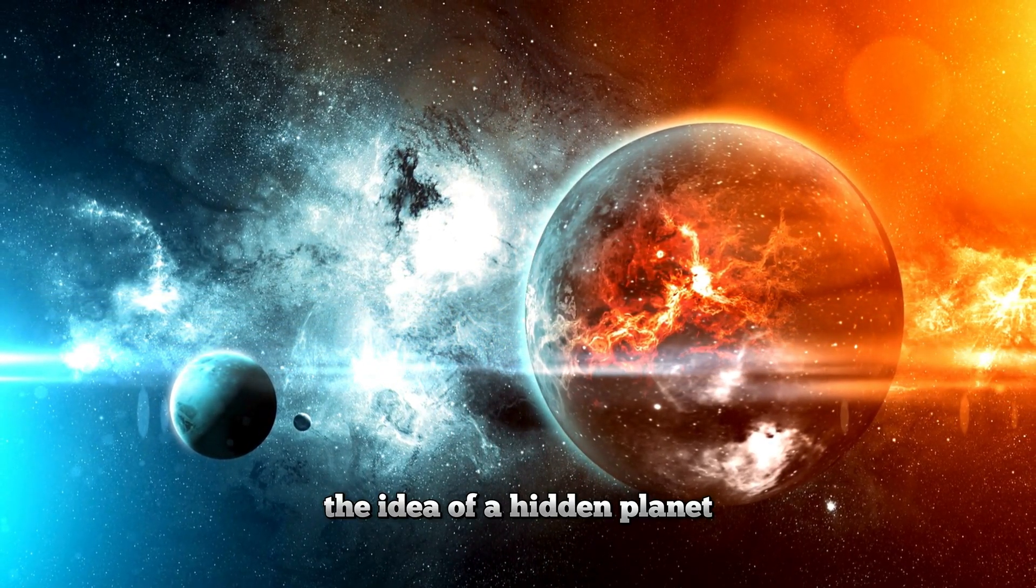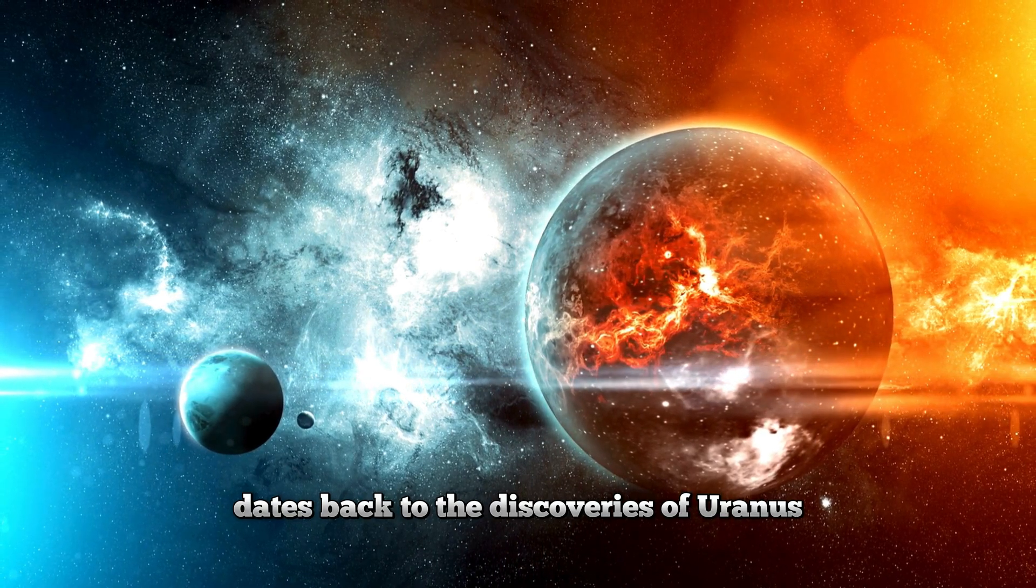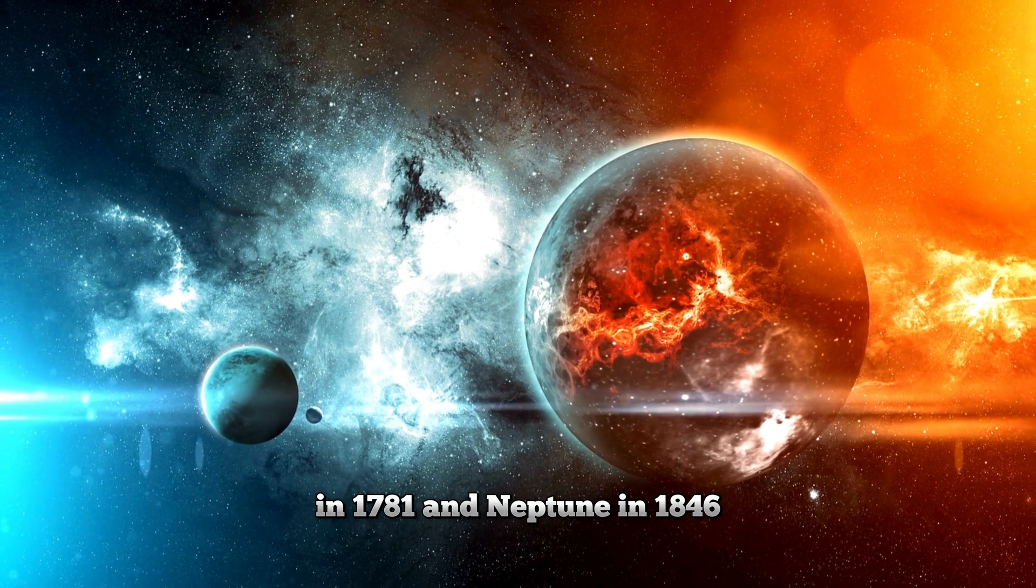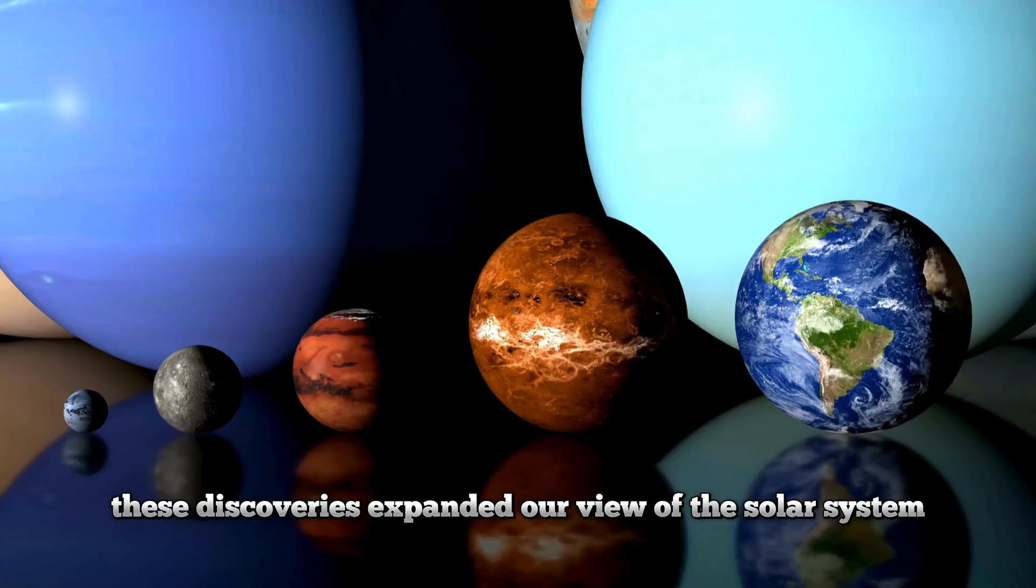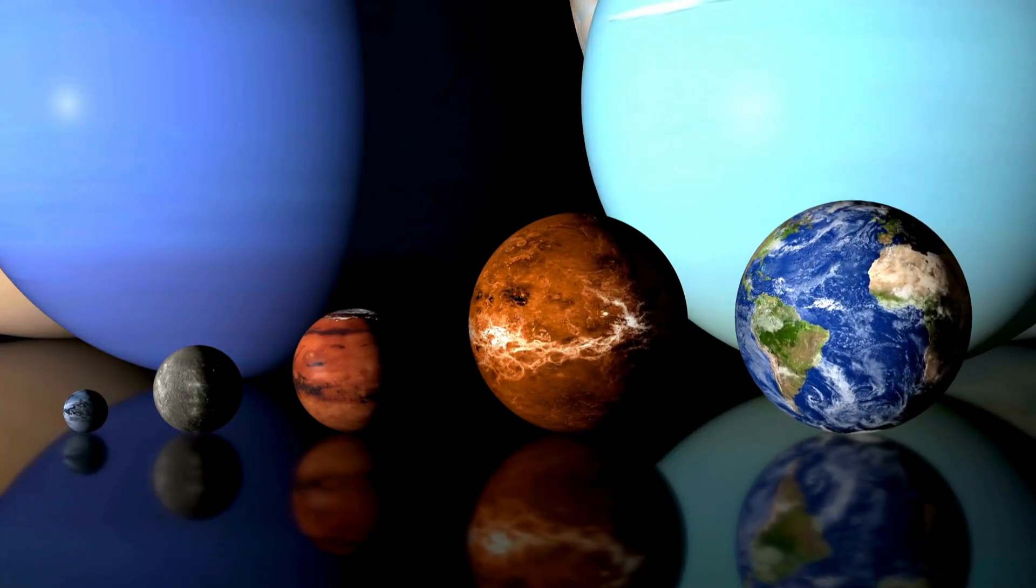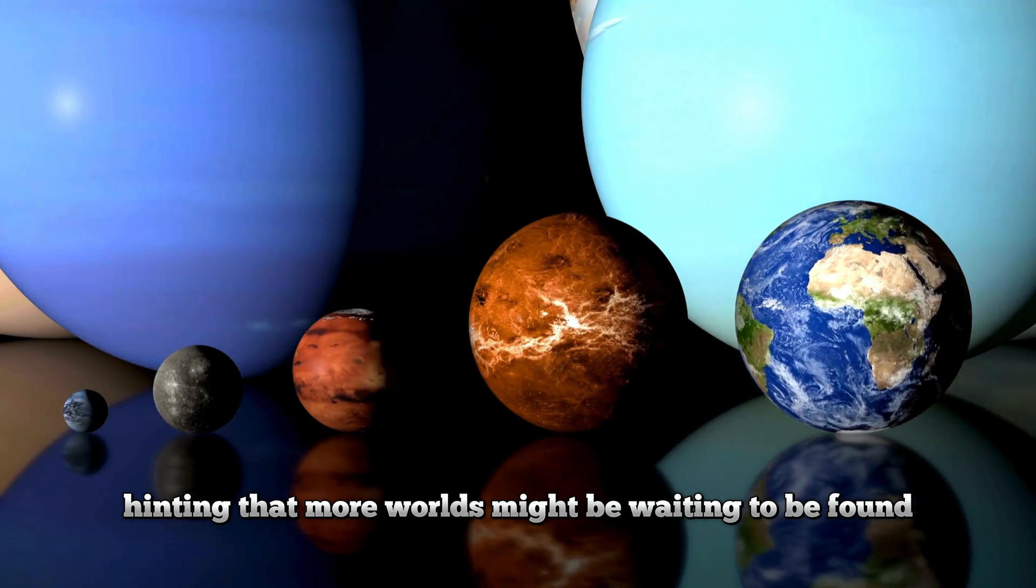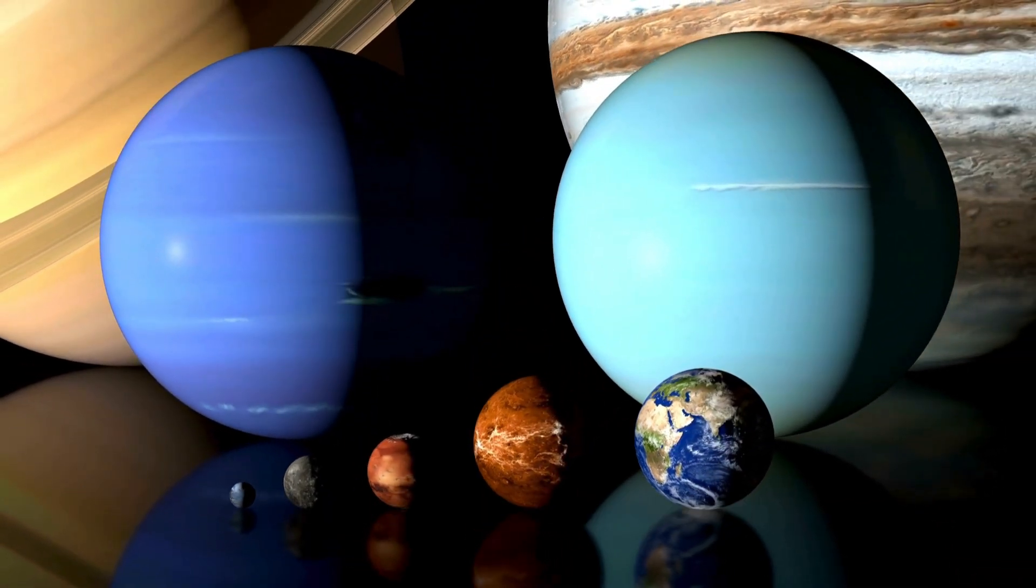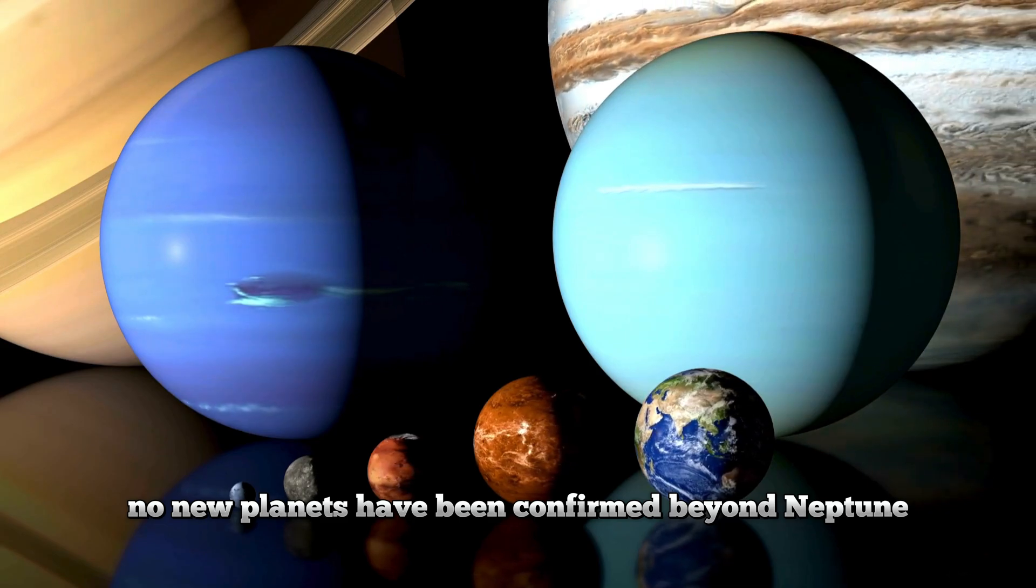The idea of a hidden planet dates back to the discoveries of Uranus in 1781 and Neptune in 1846. These discoveries expanded our view of the solar system, hinting that more worlds might be waiting to be found. However, since Pluto's demotion, no new planets have been confirmed beyond Neptune.